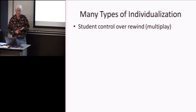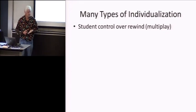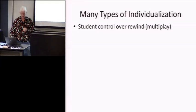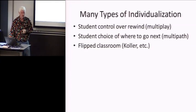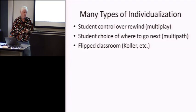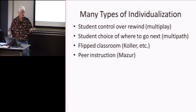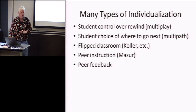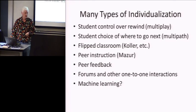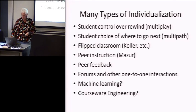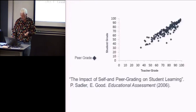There are many types of individualization. So the simplest is student control over rewind. They can just go back and replay the lesson. They can have a choice of where to go next. We can flip the classroom where they watch online and then they come in and work on it. We have peer instruction where they help each other answer questions, peer feedback where they grade themselves. We have these forums. There's this possibility of collecting all this data and applying machine learning. We have what I call courseware engineering and we'll get to that.